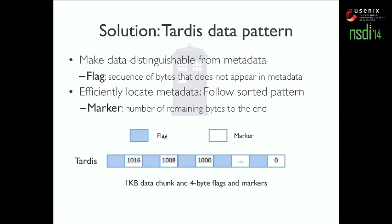We introduce another sequence of bytes called a marker, which is an integer representing the number of remaining bytes to the end of the data chunk. The TARDIS pattern is a combination of flag and marker: the flag makes the data pattern distinguishable from metadata even if split, and the marker makes the data follow a sorted pattern so we can use binary search.